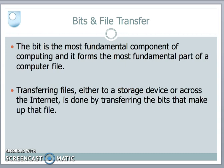We've seen in earlier tutorials that the most fundamental component of computing is the bit — that little binary digit, that little switch that is either on or off — and it forms the most fundamental part of a computer file. We transfer files all the time, from a storage unit into computer memory and back again, or across the internet. This is all done by breaking up the file into its fundamental components, the bit, transferring the bits across the wire, and then reassembling them at the other end.